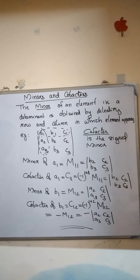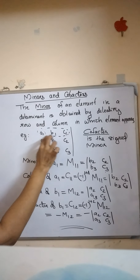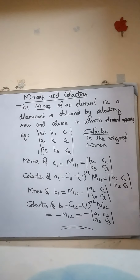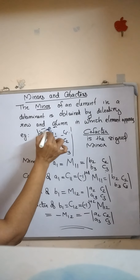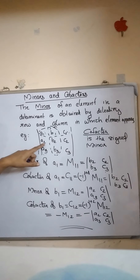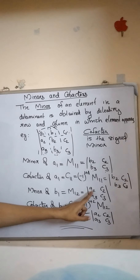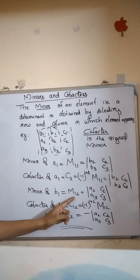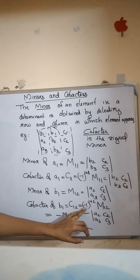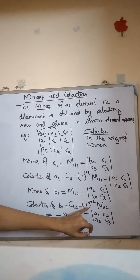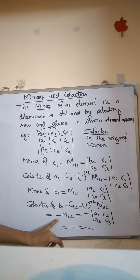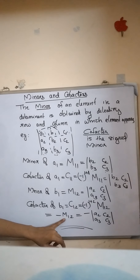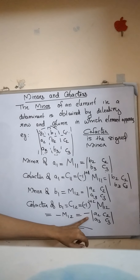Next we consider the minor of b1. Since b1 is a first row, second column element, we delete the first row and the second column. We get the determinant a2, c2, a3, c3, which is the minor of b1, represented as M12. The cofactor of b1 is the signed minor, where the sign is minus 1 raised to 1 plus 2, which is minus 1 raised to 3, giving minus 1. So the cofactor of b1 is the negative of the minor M12, that is, minus the determinant a2, c2, a3, c3.